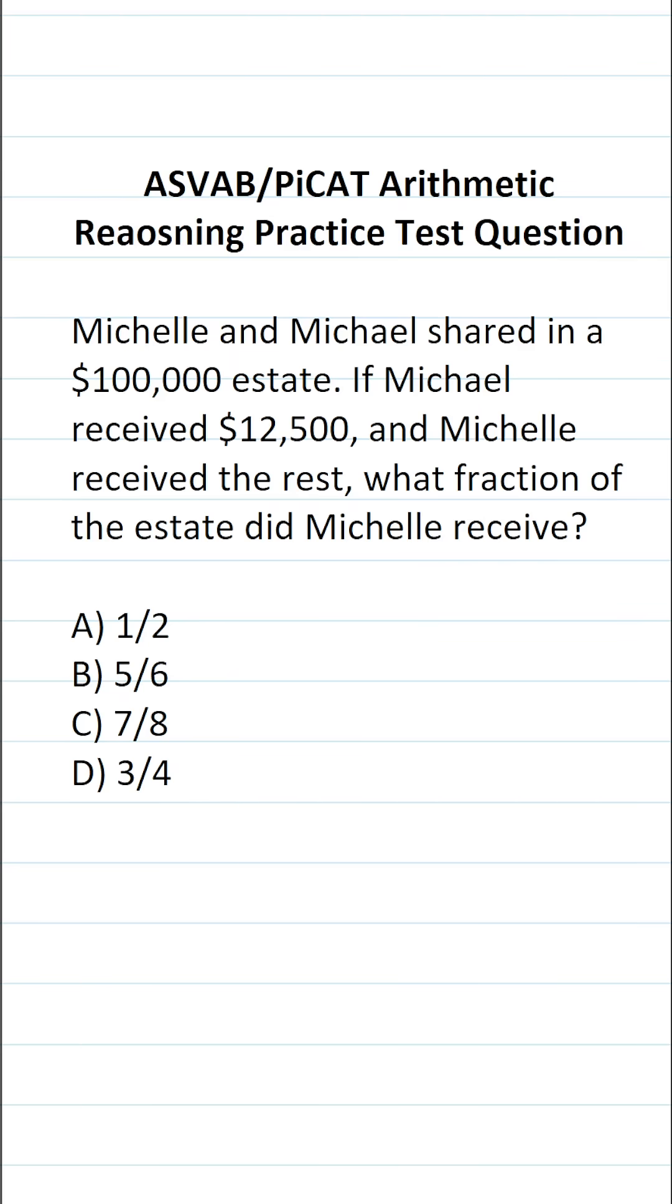This arithmetic reasoning practice test question for the ASVAB and PiCAT says: Michelle and Michael shared in a $100,000 estate. If Michael received $12,500 and Michelle received the rest, what fraction of the estate did Michelle receive?